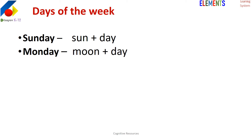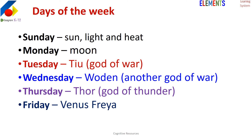Then the next question comes to their mind: what about the other days, like Wednesday and Thursday — where do they come from? The rest of the days come from Roman mythology, from gods. The god of war — Wednesday; Woden is another god of war. Thursday is easy to remember — it's the god of thunder. And Friday: Venus, Frigg, is another figure from Roman mythology.